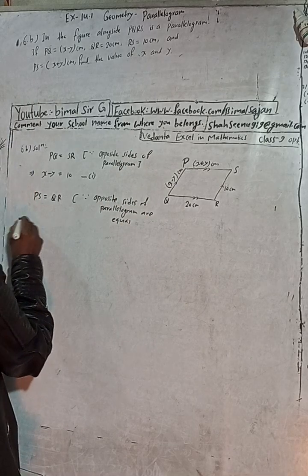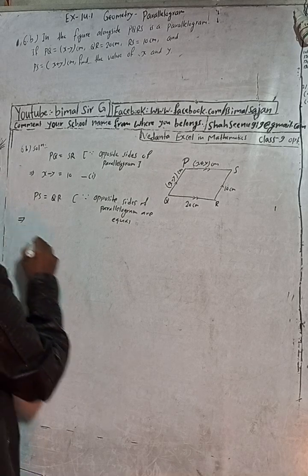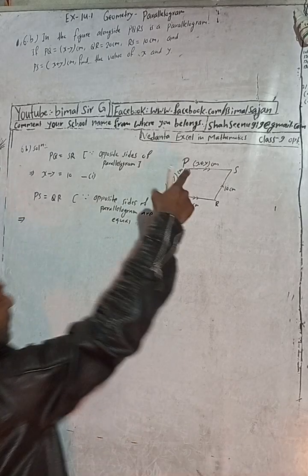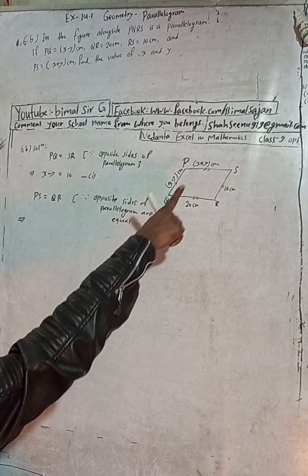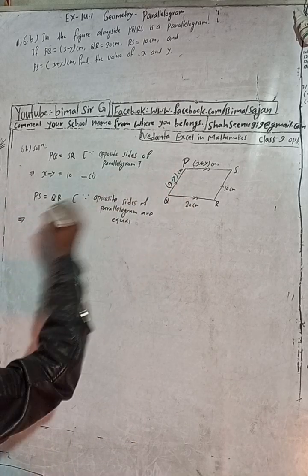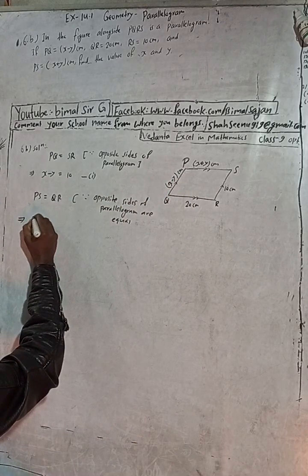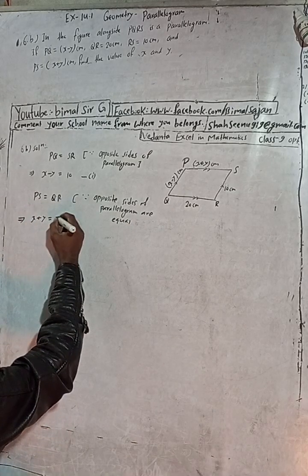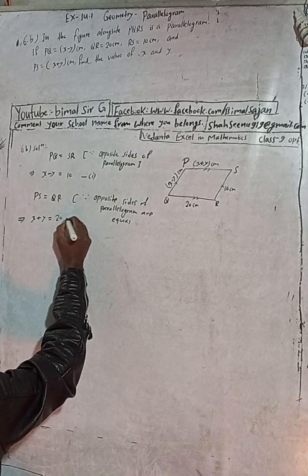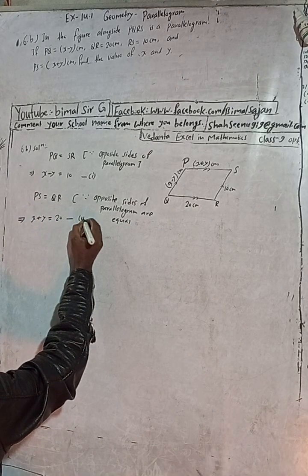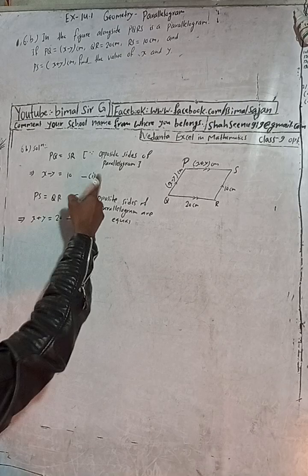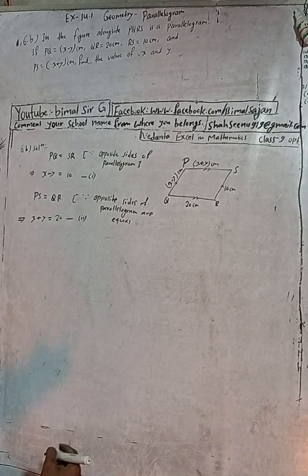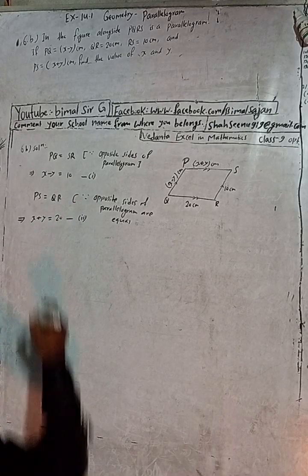In the same way, PS is equal to QR. PS is x plus y, and QR is 20. So x plus y is equal to 20. This is Equation 2. Now we solve Equations 1 and 2.